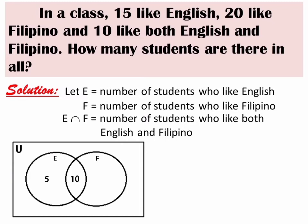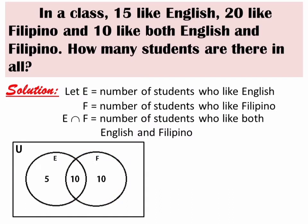How about Filipino? Again, we subtract the 10 in the intersection. The given data says 20 like Filipino, so 20 minus 10 equals 10. Only 10 students will be written in the Filipino-only part. After completing the Venn diagram, let's answer the question: How many students are there in all? Just add all the elements. E union F equals 10 plus 10 plus 5, which equals 25.